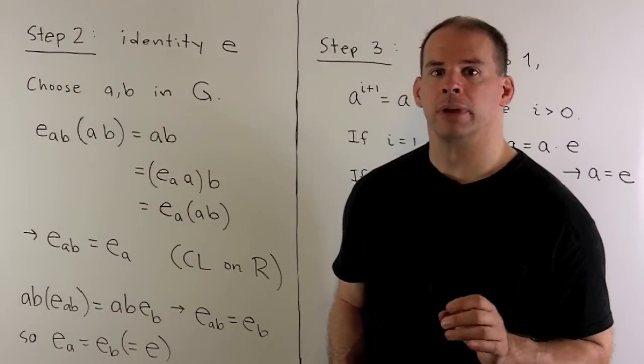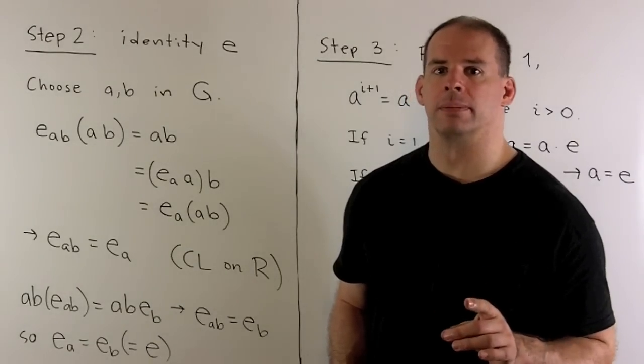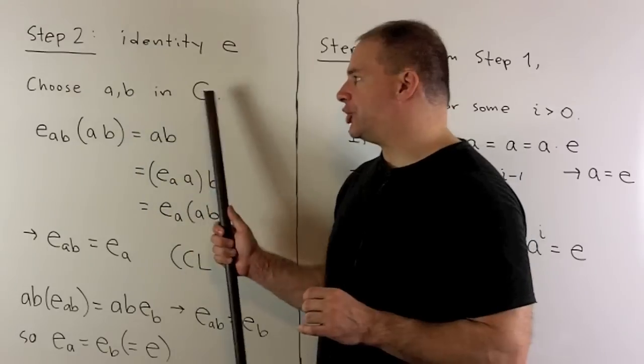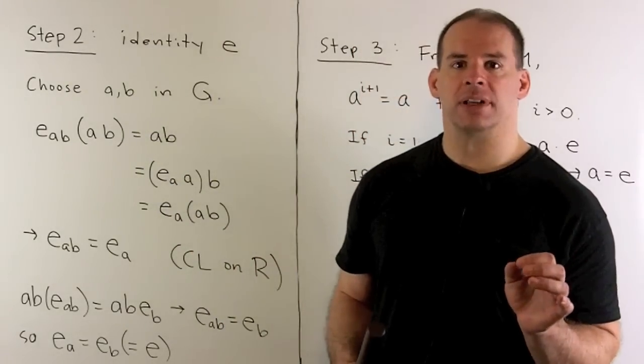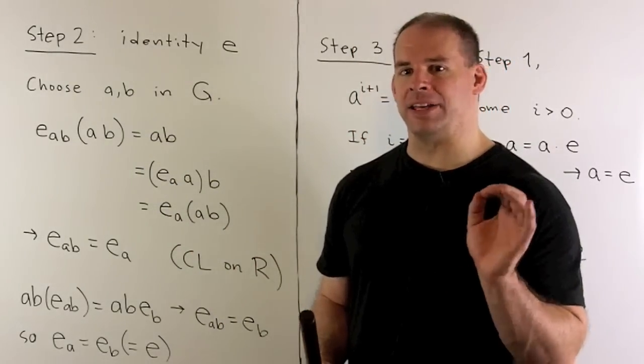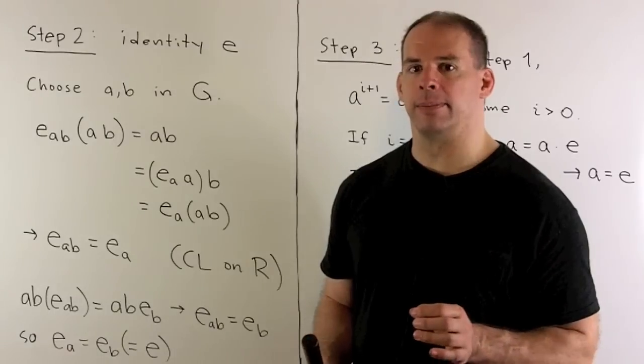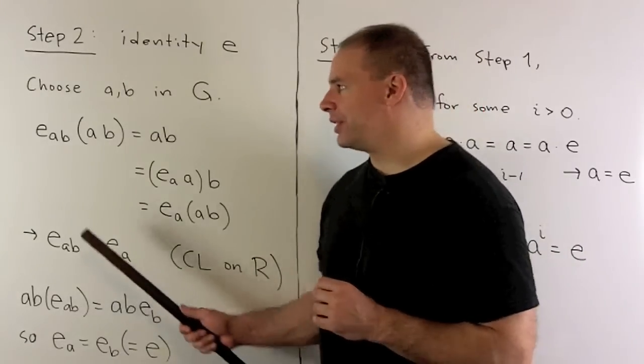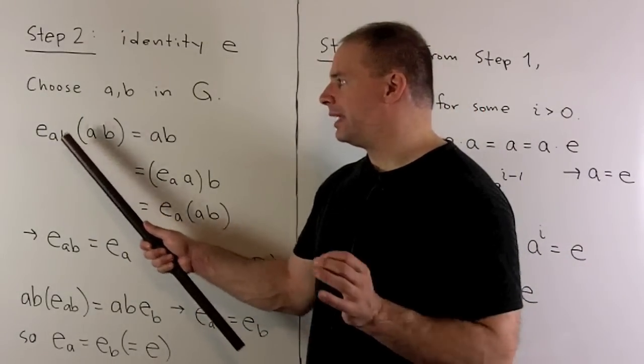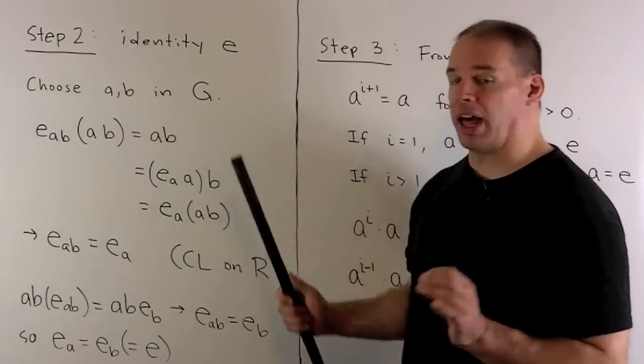For step two, find the identity of G itself. Now, I'll start with A and B in G. We take the product then we'll multiply on the left by E sub AB and E sub A. By definition of the identity for AB, E sub AB times AB is just AB itself.